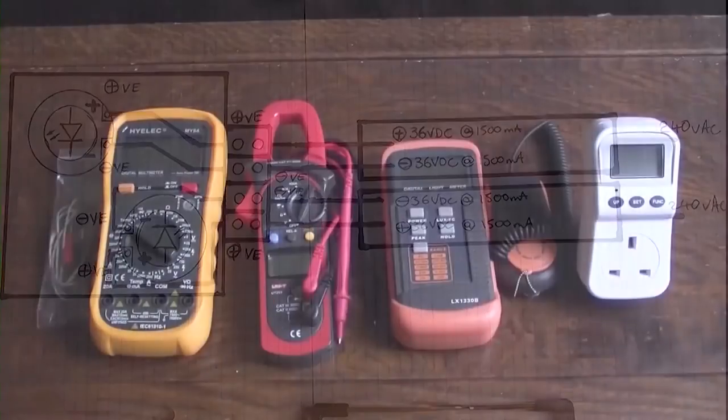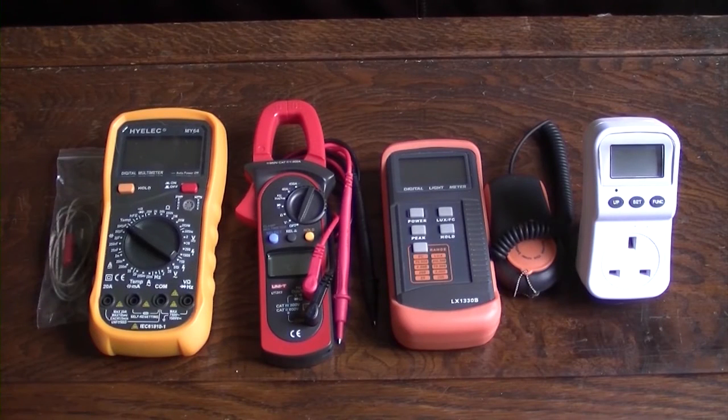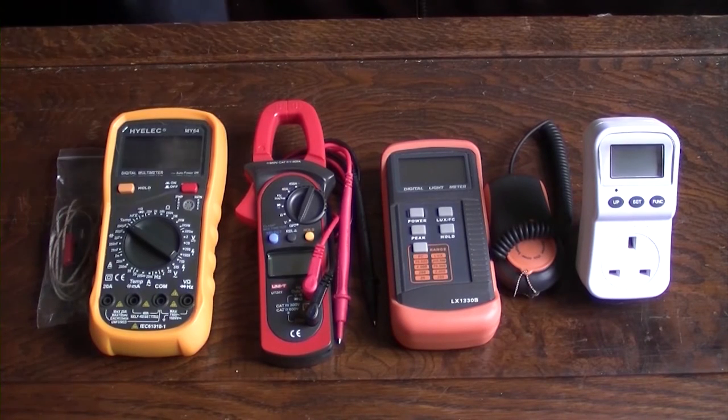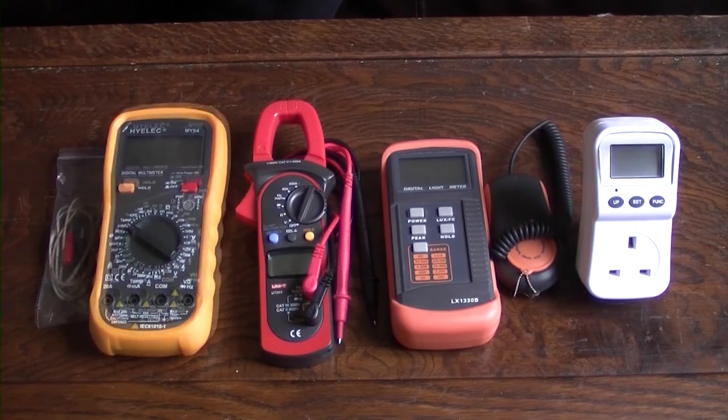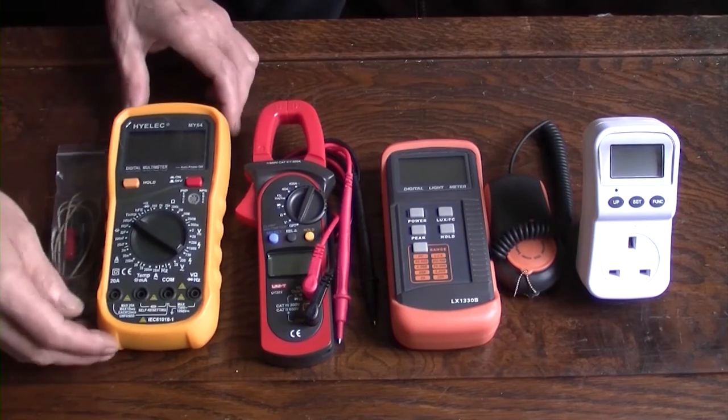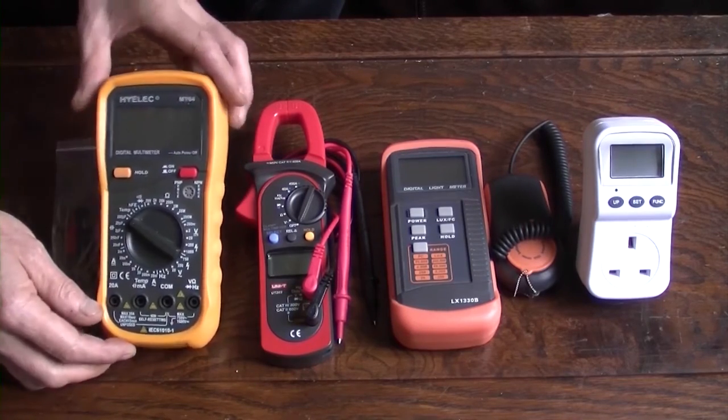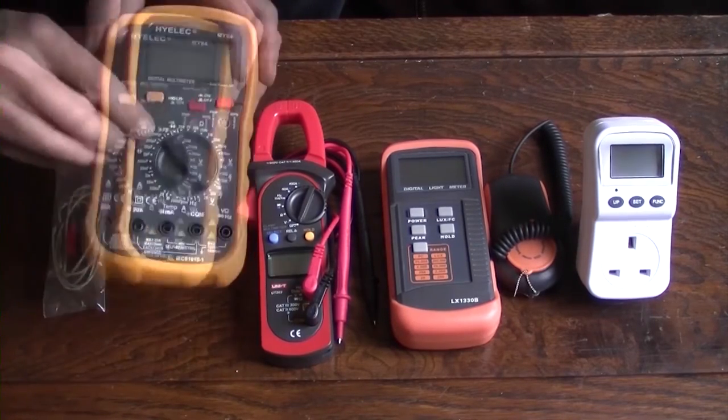And here's the test equipment that we'll be using to establish all of our settings today. On the left we have a Hyalek multimeter. We'll be using this as a thermometer today, so any time you see that on screen it will be reading temperature in centigrade.